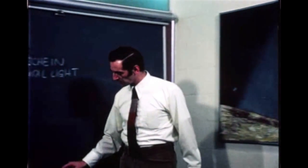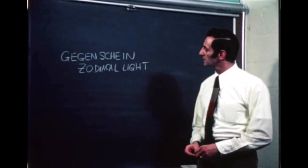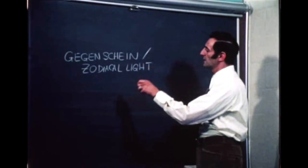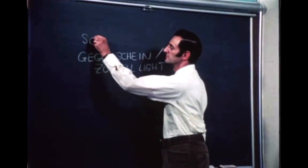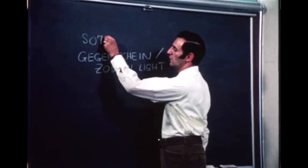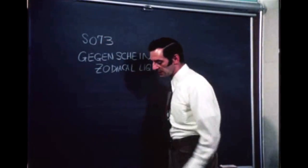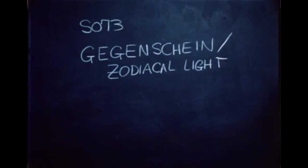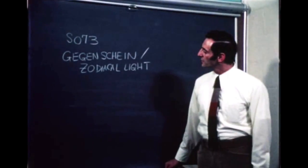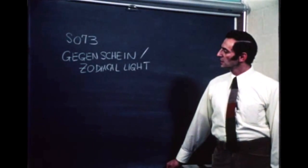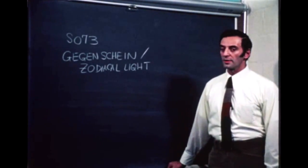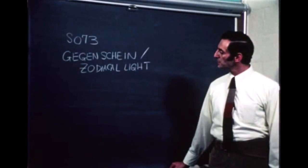In our experiment on Skylab, which is called Gegenschein zodiacal light and has the number SO73, we're going to be making measurements with a small telescope and camera of the brightness of this faint glow on the sky through all three Skylab missions.